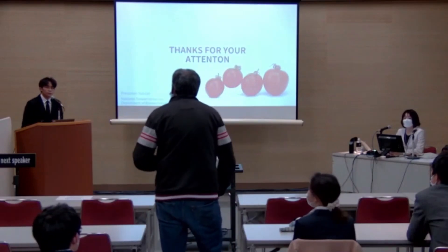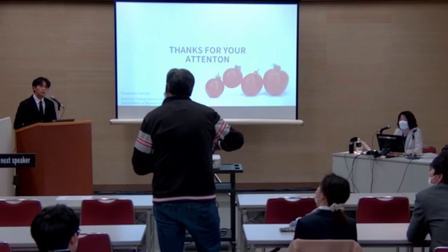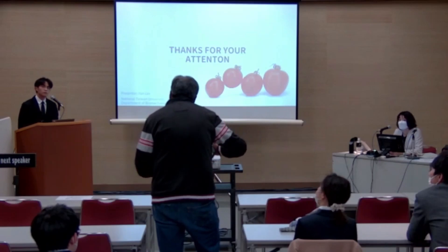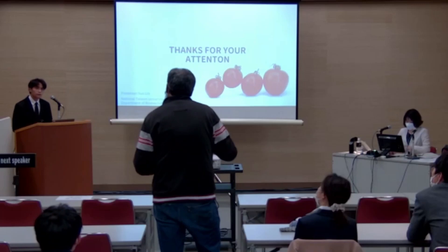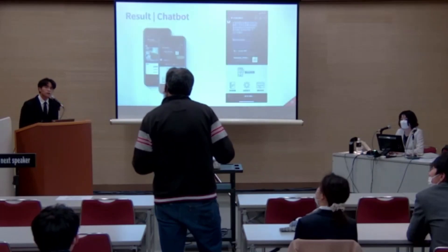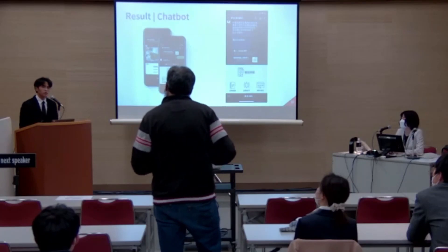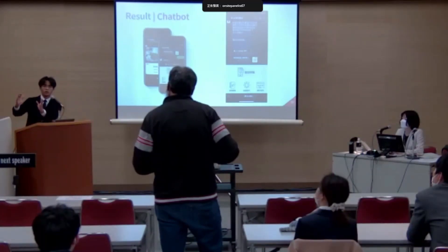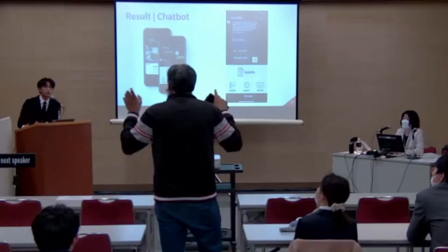A questioner asked: what is the distance for capturing images from the plant, and does one image contain only one leaf? The presenter explained there is a tutorial for users of the chatbot. When taking images, the distance is about 30 centimeters, because the model uses 640×640 images, with one leaf per 640×640 image. The uploaded image is resized to 640×640 pixels, and the leaf should cover about two-thirds of the image.